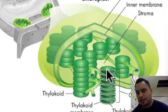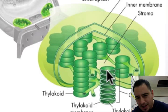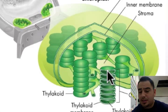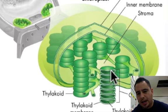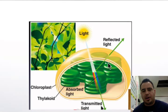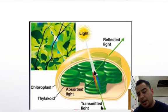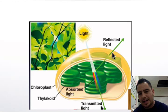The thylakoid is where the magic happens — specifically on its membrane. There are chlorophyll molecules lined up on the thylakoid membrane. These are proteins that trap the sun's energy and also give plants their color. Light is made up of all the colors of the rainbow, and as light hits, all colors except green are absorbed and used for photosynthesis. Green is the color that's reflected back to your eye, which is why plants appear green.